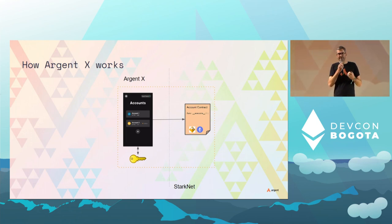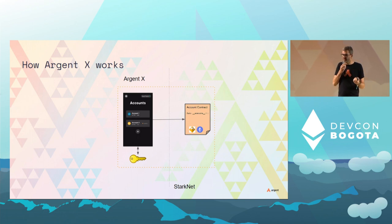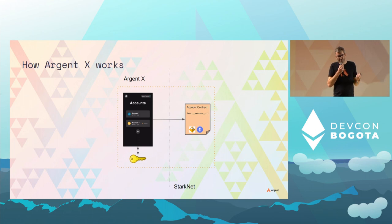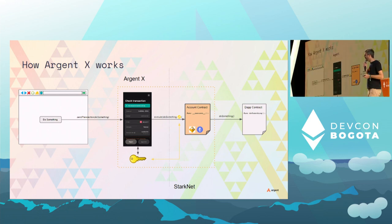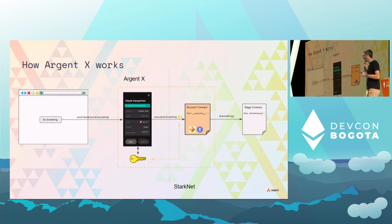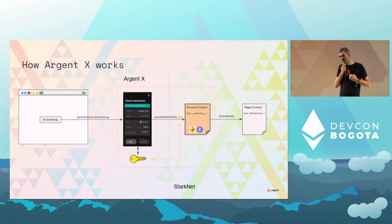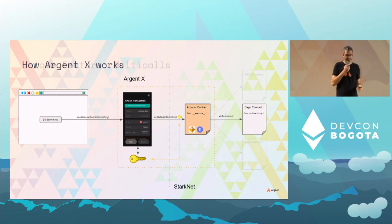How does Argent X work? Unlike a wallet like MetaMask where you just think about the client and a key that can sign transactions, with account abstraction you also need to think about the account contract. So Argent X is three things: a client front-end, keys that can sign transactions, and account contracts that live on-chain. From a user or dApp developer perspective it works exactly as you'd expect — when you connect your wallet and do an action, the wallet pops up, you approve, the extension uses a key to sign the authorization, this is sent to the account contract on-chain, which validates and executes the operation.